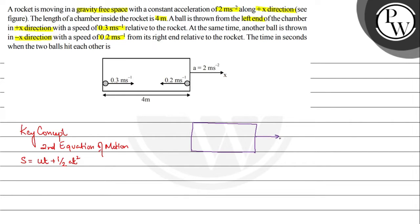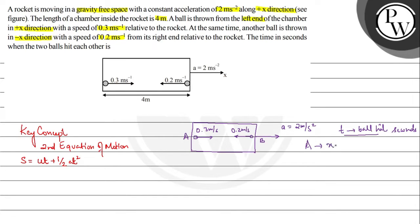Our rocket is moving with an acceleration of 2 meter per second square. Consider: we have ball A thrown at 0.3 meter per second from the left end, and ball B thrown at 0.2 meter per second from the right end. Let us suppose this is ball A and this is ball B. Suppose at time T seconds the balls hit each other. At that time, let us assume A has covered x meters, then B has covered 4 minus x meters.